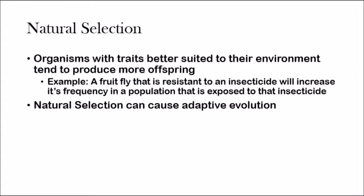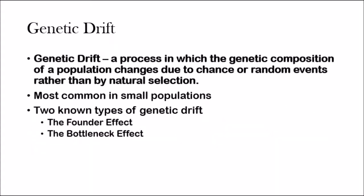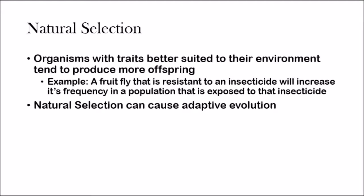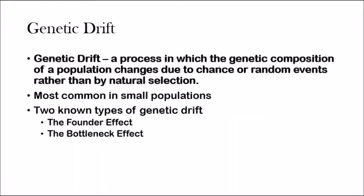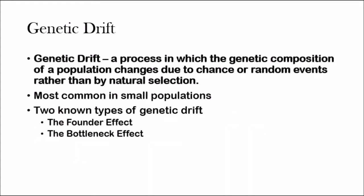Natural selection can cause what's called adaptive evolution. Adaptive evolution is evolution that results in a better match between an organism and its environment. For example, a horse's teeth — adaptive evolution can cause the structure and shape of the teeth in a population to make it fit for a grass diet. The structure and shape of the teeth will eventually be perfected for the diet of that horse, until all organisms in that population have those perfect teeth. Natural selection causes microevolution because it selects for alleles that better suit the environment.